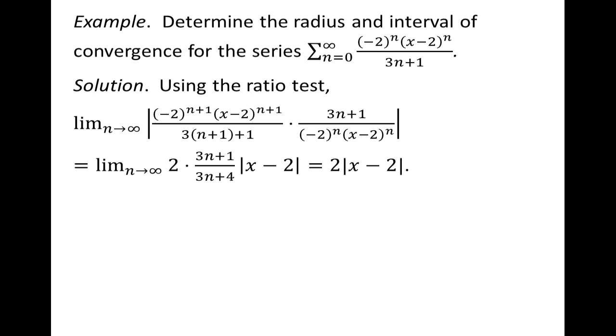We want this quantity to be less than 1, so we set it less than 1 and solve for x minus our center in absolute value. Well, our center was 2. We're solving for the absolute value of x minus 2, and we get less than 1 half, which means our radius of convergence is 1 half.